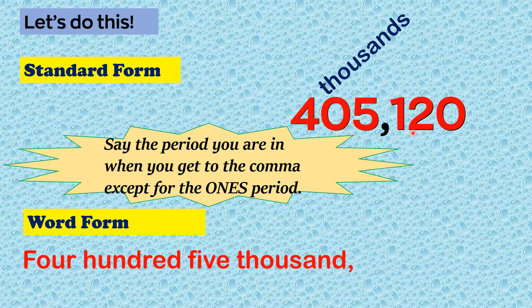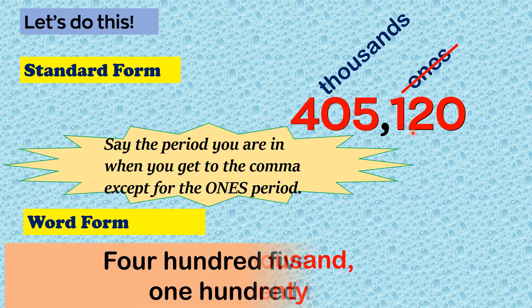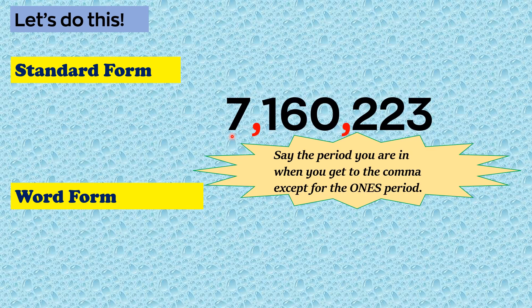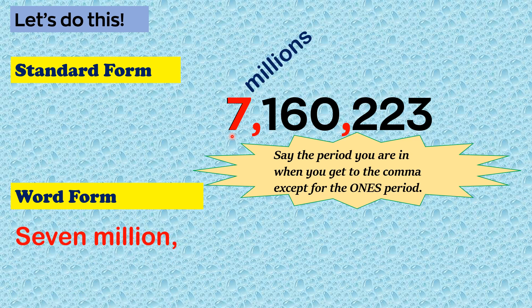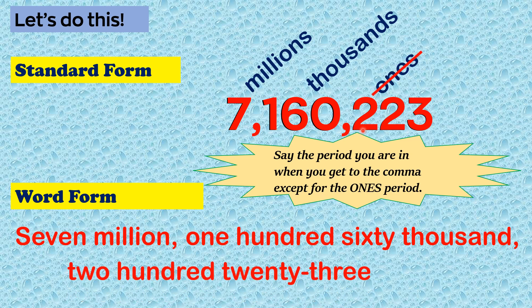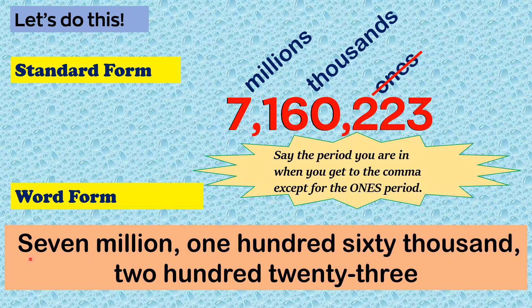Continuing: 405,120. Then building up 7,000,000 plus 160,000 plus 223 gives us 7,160,223.